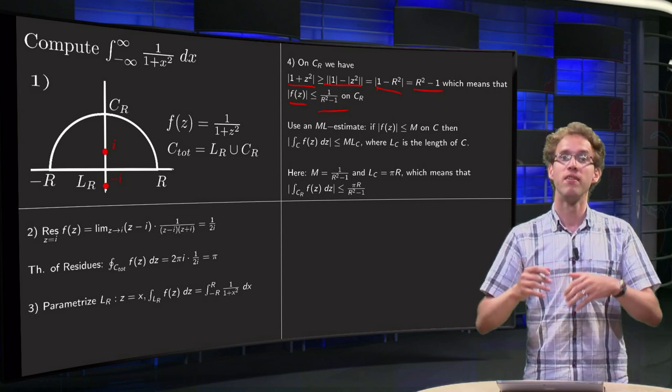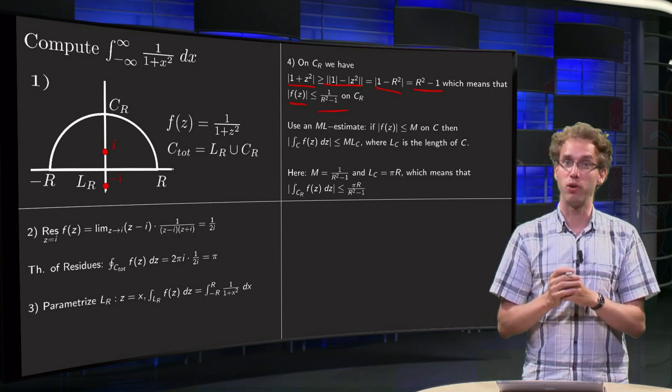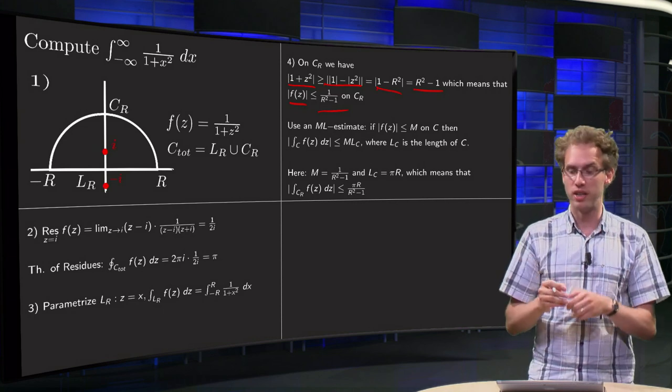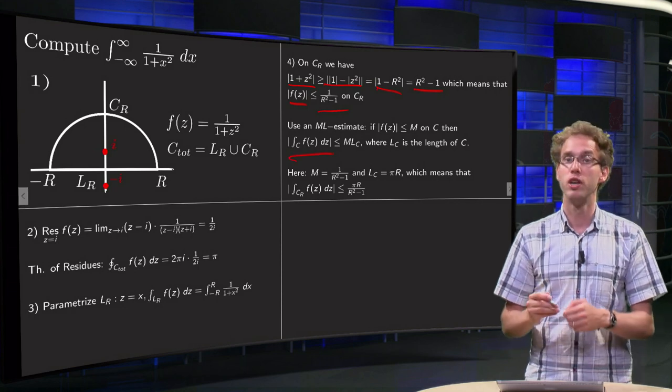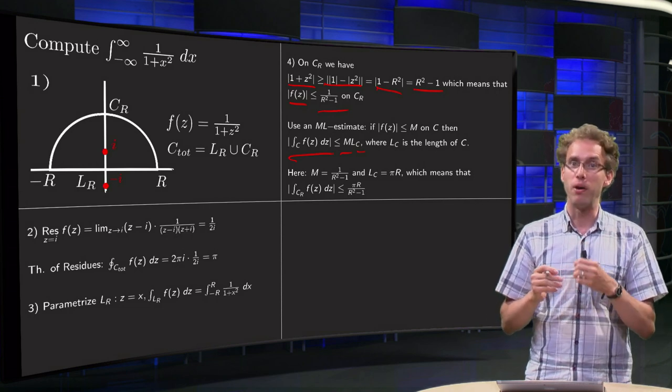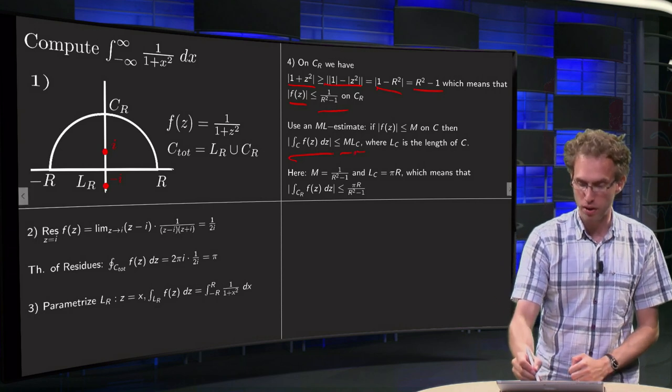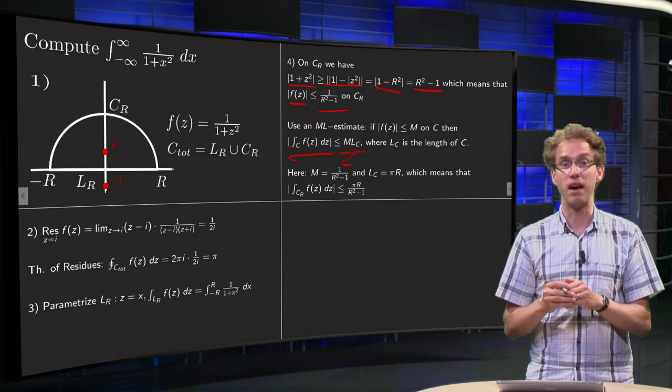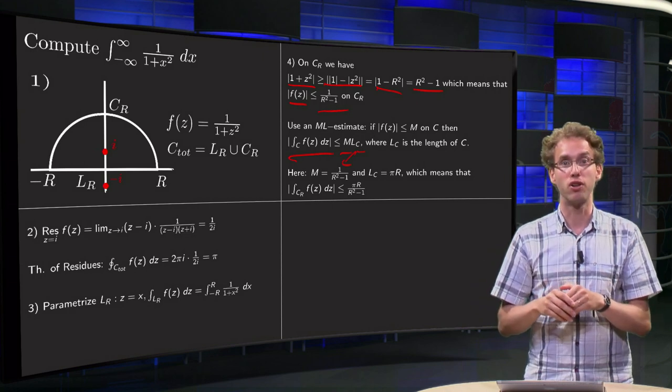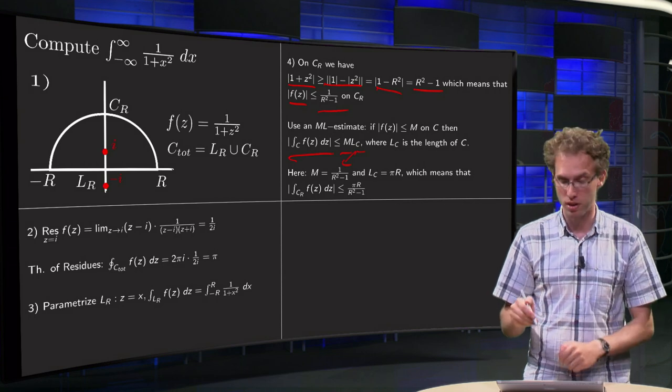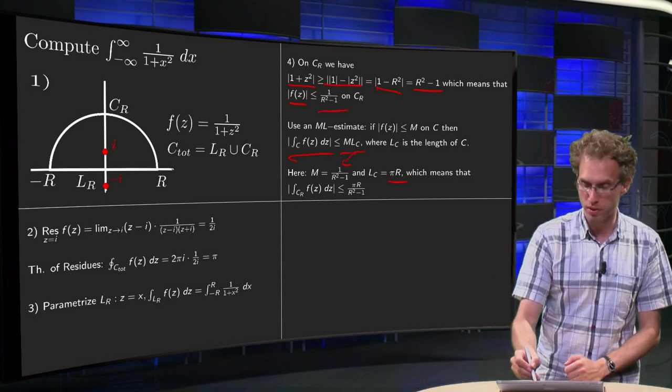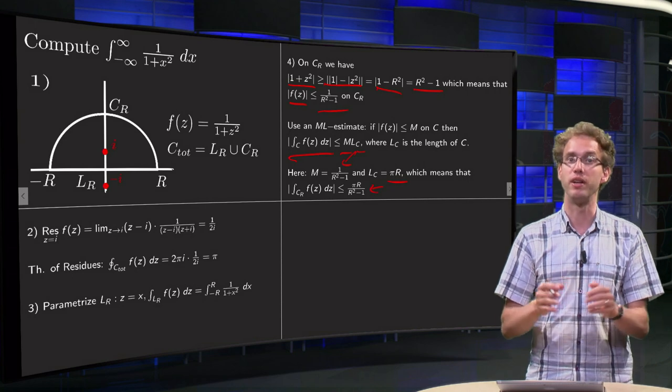And then we can use an ML estimate. If the norm of f(z) is smaller or equal than some M on the contour C, and if f(z) is continuous on C, then the norm of the integral is smaller or equal than this M times the length of C. We have seen that we can take for M 1 over R squared minus 1. The length of the curve is just a circular arc with radius R and then one half of the circle, so that equals π times R. That means that the norm of the integral along C_R is smaller or equal than πR over R squared minus 1. And that's step 4. I already see that if you take R to infinity then this will vanish.